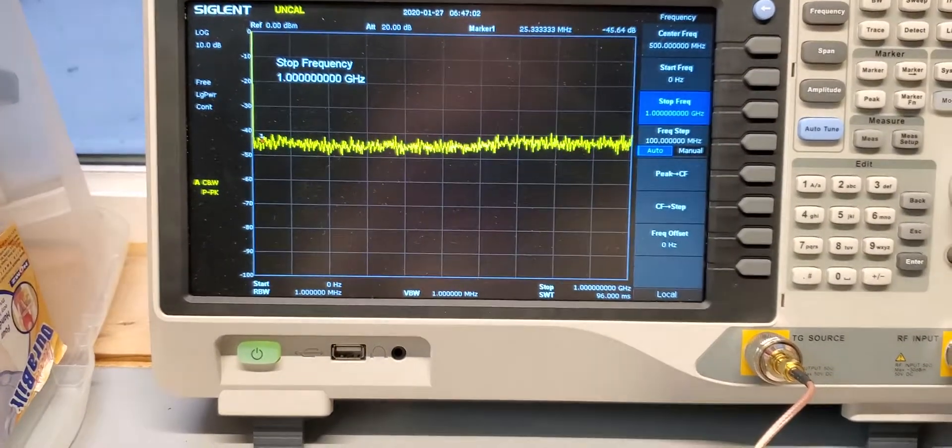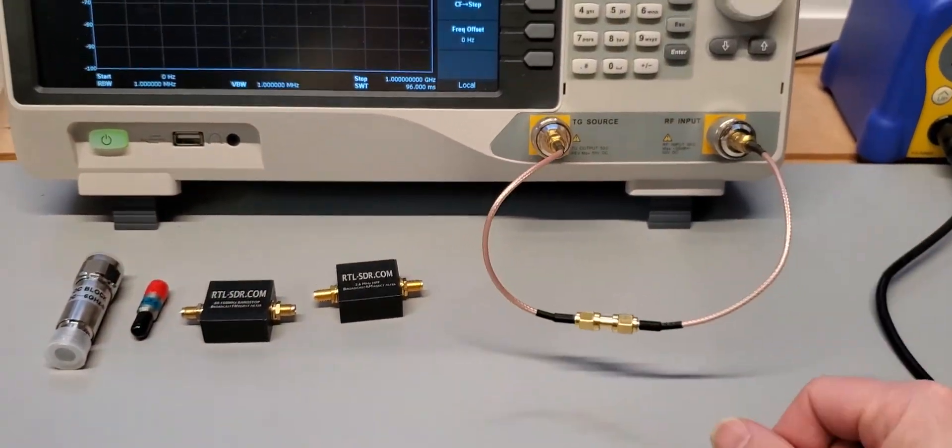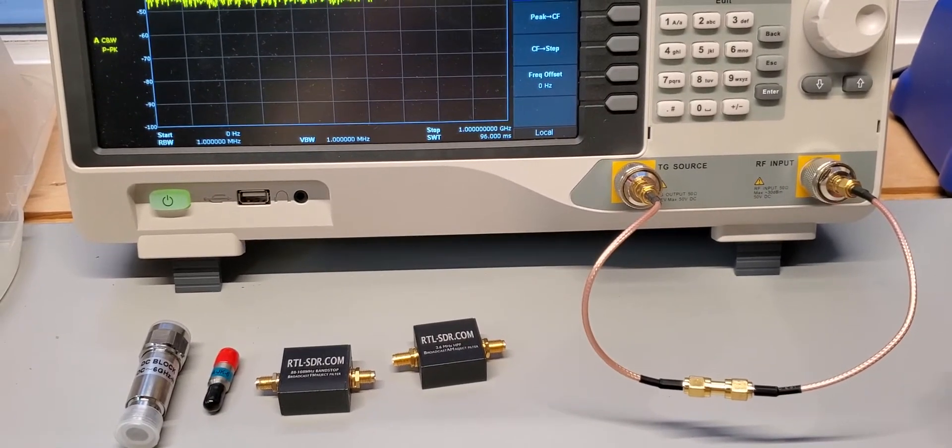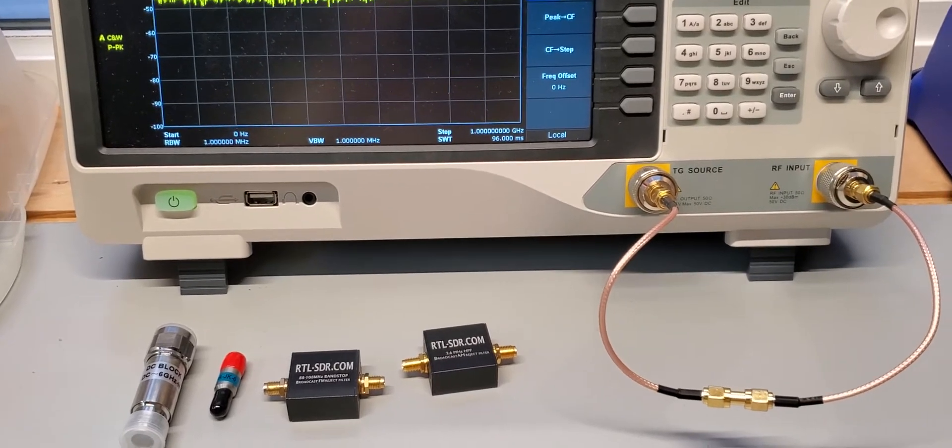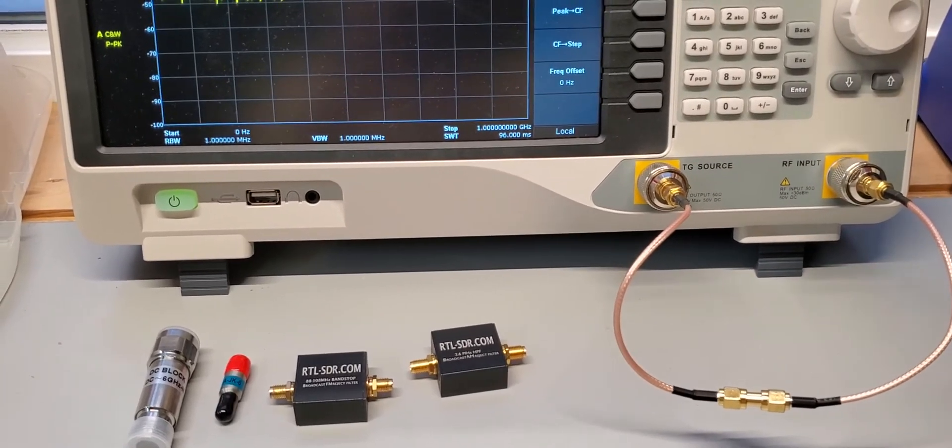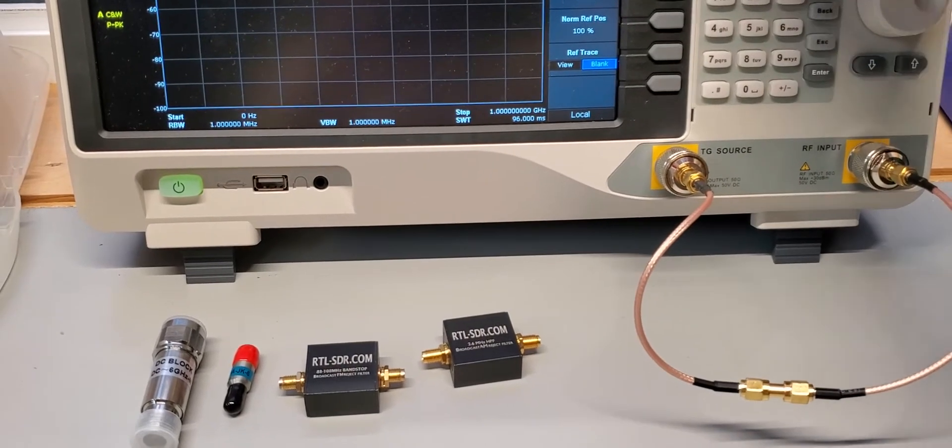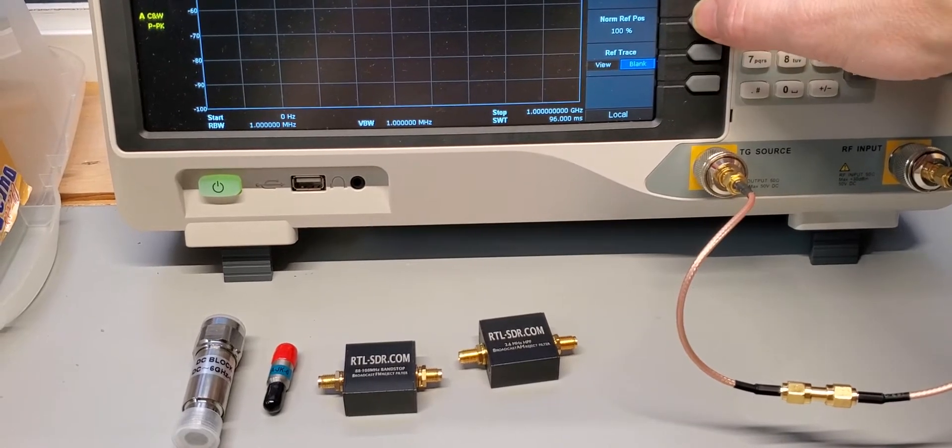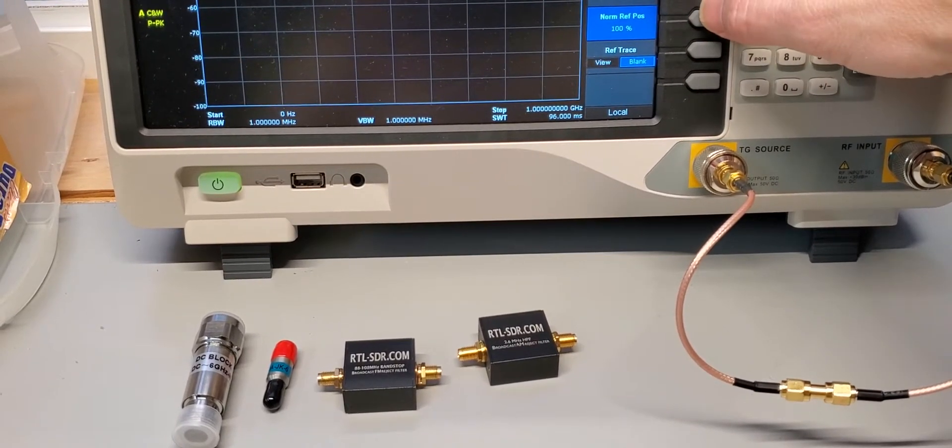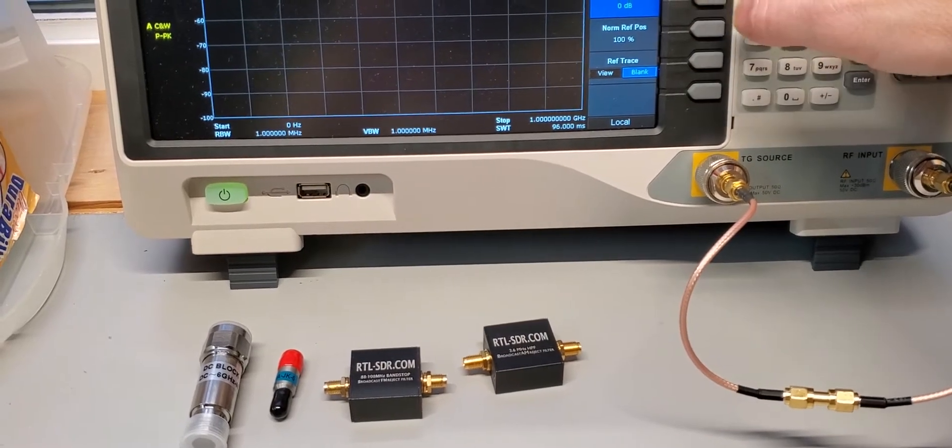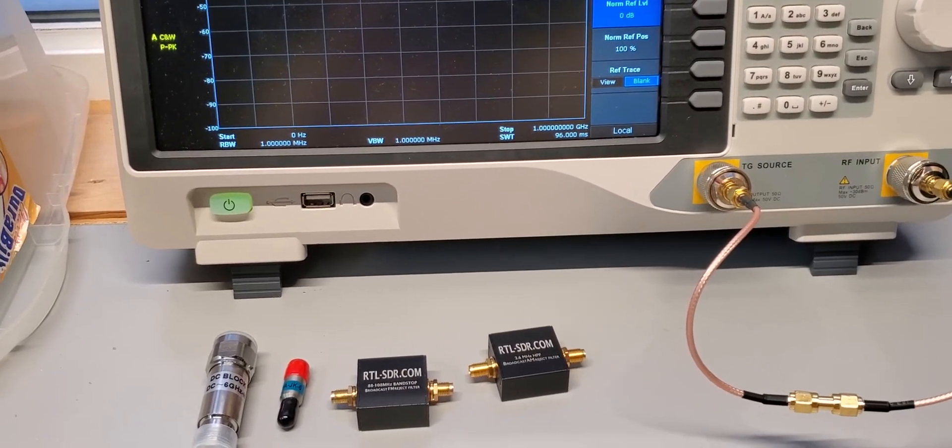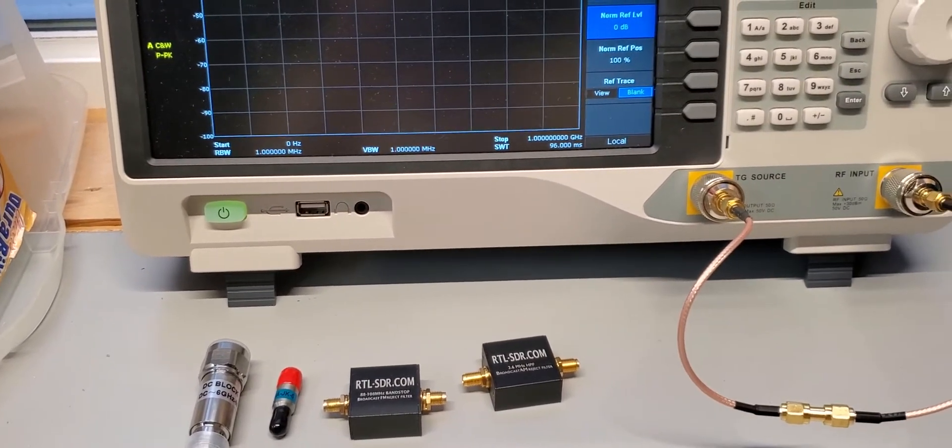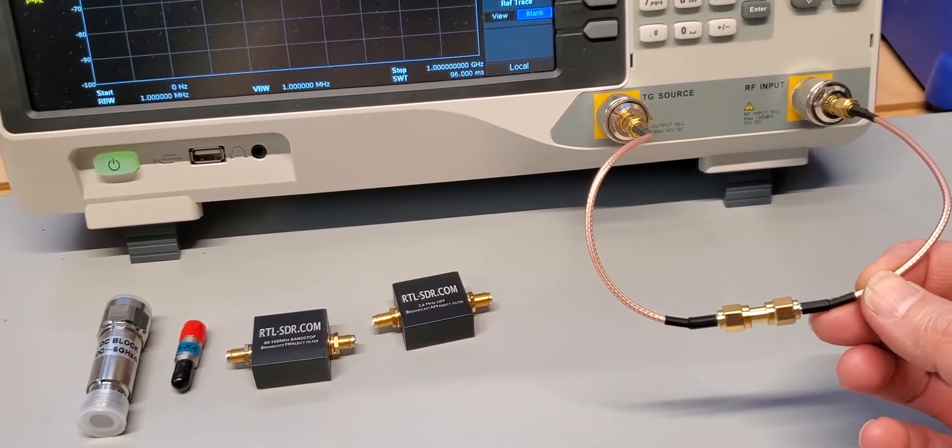So the first thing we're going to do is calibrate it. Just a disclaimer, I'm no RF specialist, just a hobbyist, so bear with me. We want to turn on the tracking generator and have normalized on so that we can go ahead and put in our device under test.